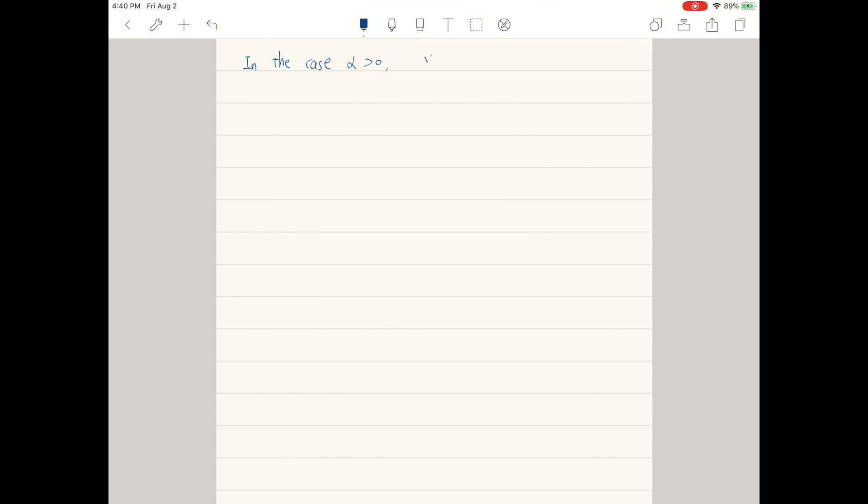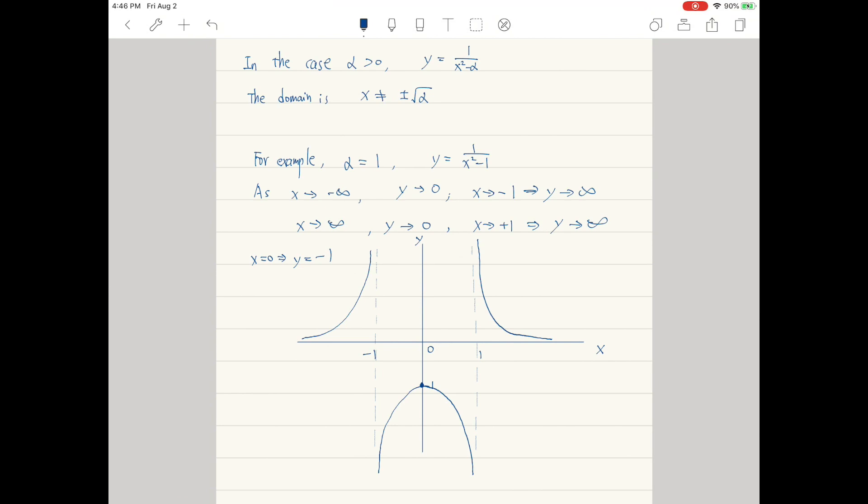Then we consider the second case when a is positive. The graph is more complicated and I refer to the Stata graphics to help me get the shape of the graph. There is a local maximum at the point (0, -1/a).